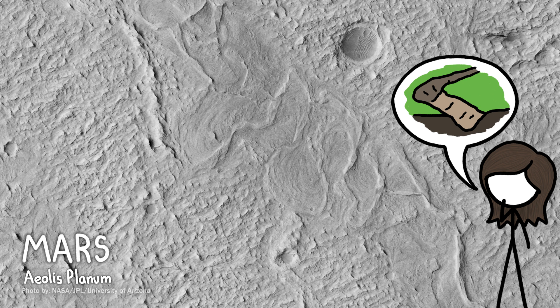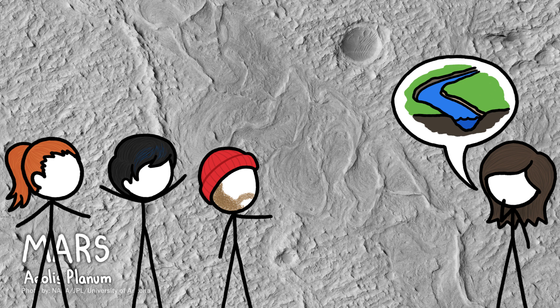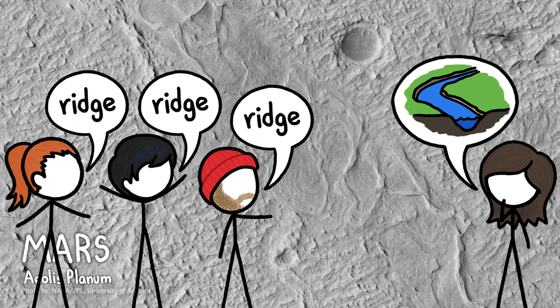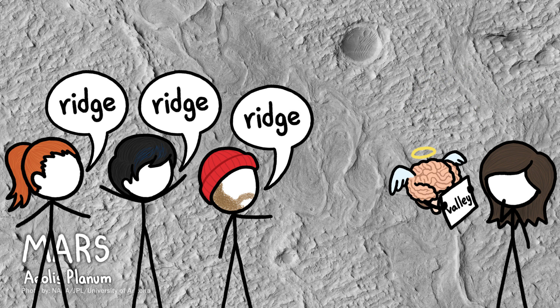I mean, river channels should obviously be valleys since they've been carved into the ground. This seems like such a basic fact to me that even when everyone else on my team said they saw this as a ridge, my brain kept telling me it was a valley.